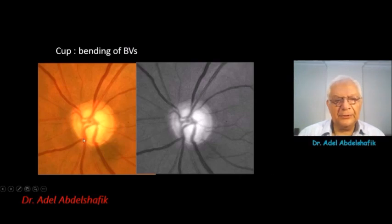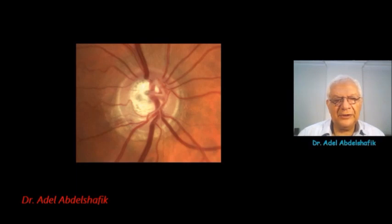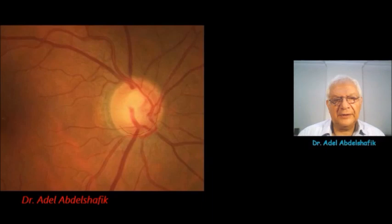What about the cup? We follow the blood vessels, especially the medium-sized blood vessels, and we check any change of the direction of the vessels. As noticed here, you can see the reflection along the vessel — it disappears in this area, so we get a change in direction at this location. This is the outer limit of the neural tissue, just inside the border tissue of Elshning, and this is the location of the change of blood vessels — this is the limit of the cup. Sometimes it's not visible all around, but in many areas you can define it certainly.